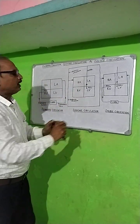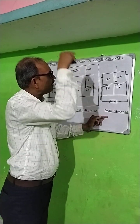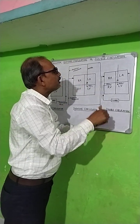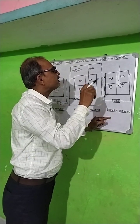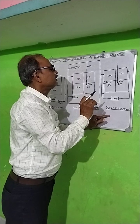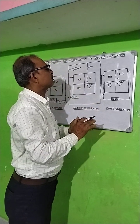Then double circulation. In every heartbeat, the blood enters and leaves the heart twice. This is called double circulation.